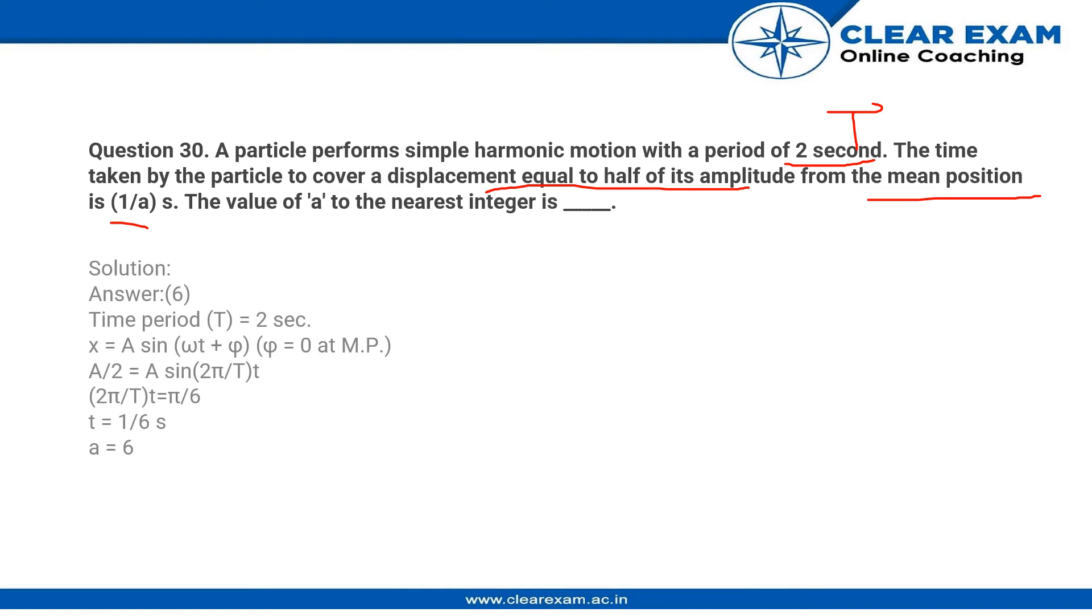The mean position means the angle from the mean position becomes 0, because from the mean position the angle tells us about the position of the particle. If the particle is at the mean position and it covers a distance equal to half its amplitude from it, the angle should be equal to 0 for us to calculate that.